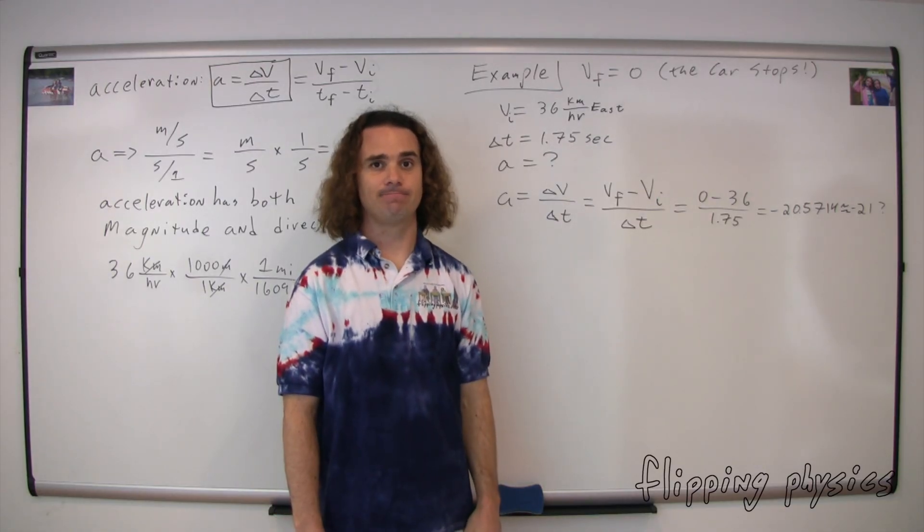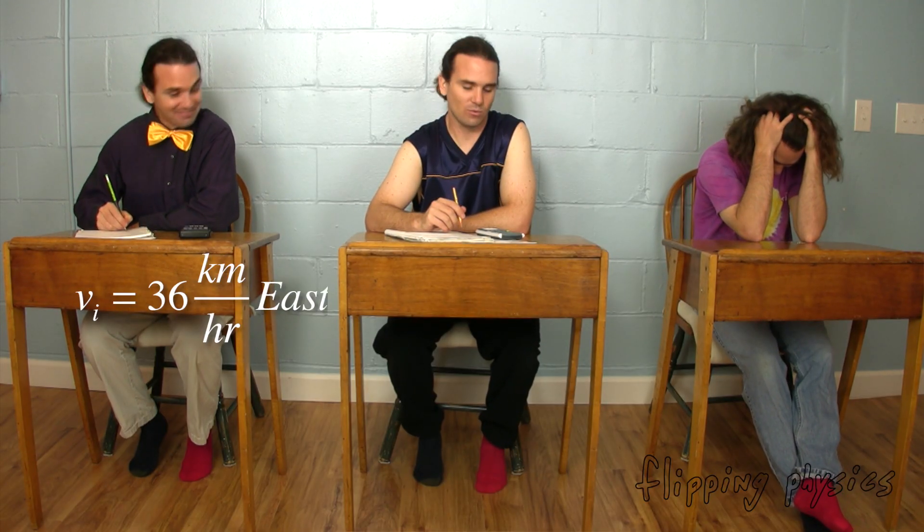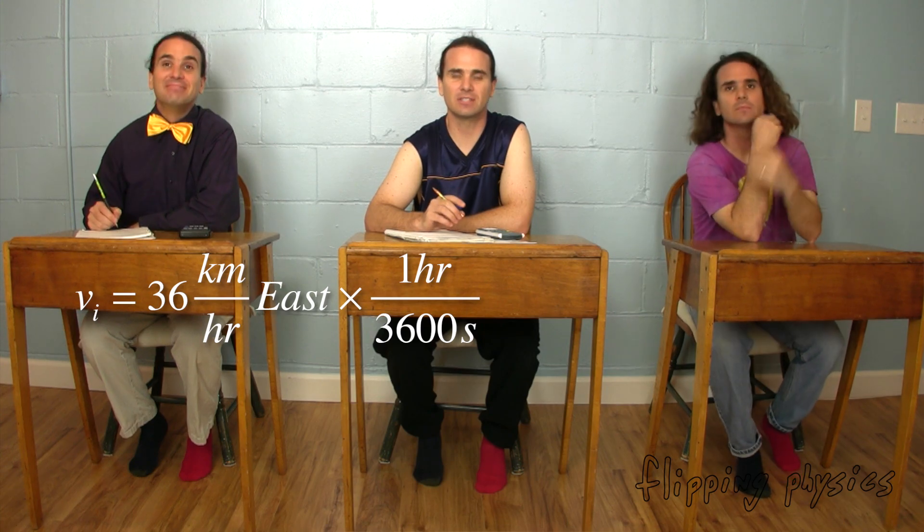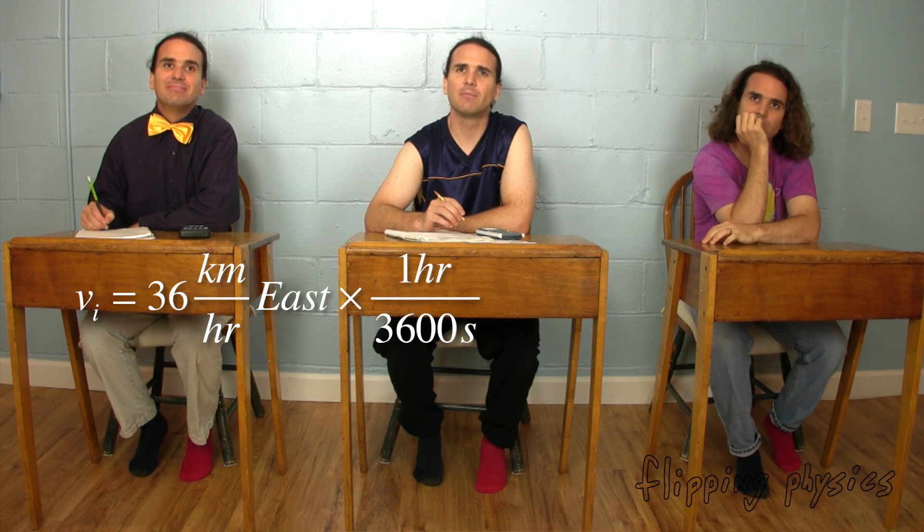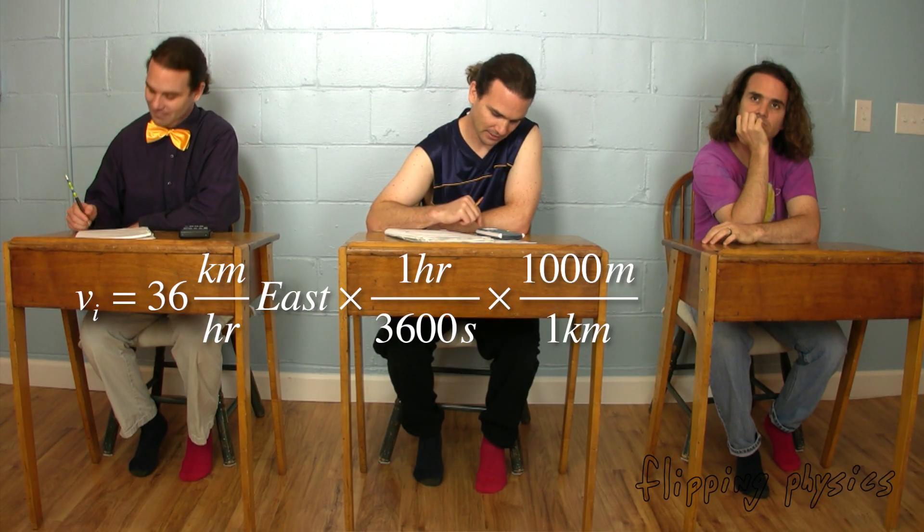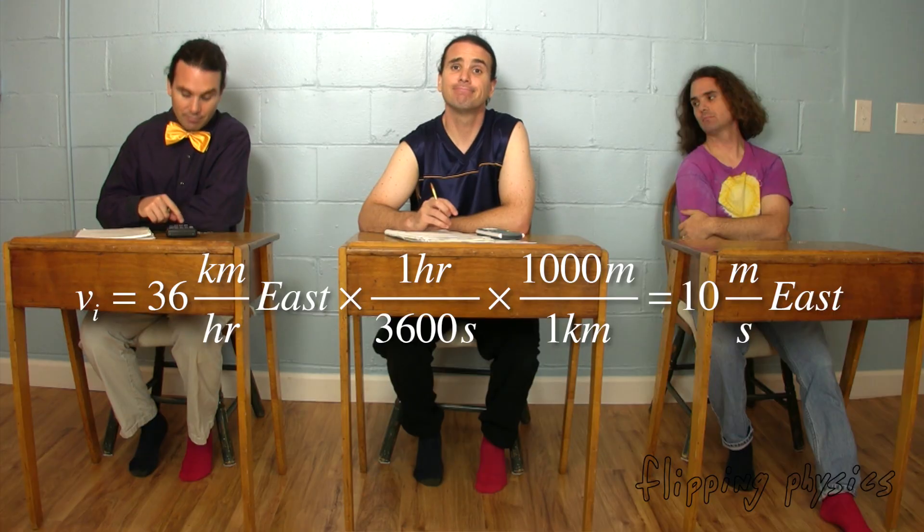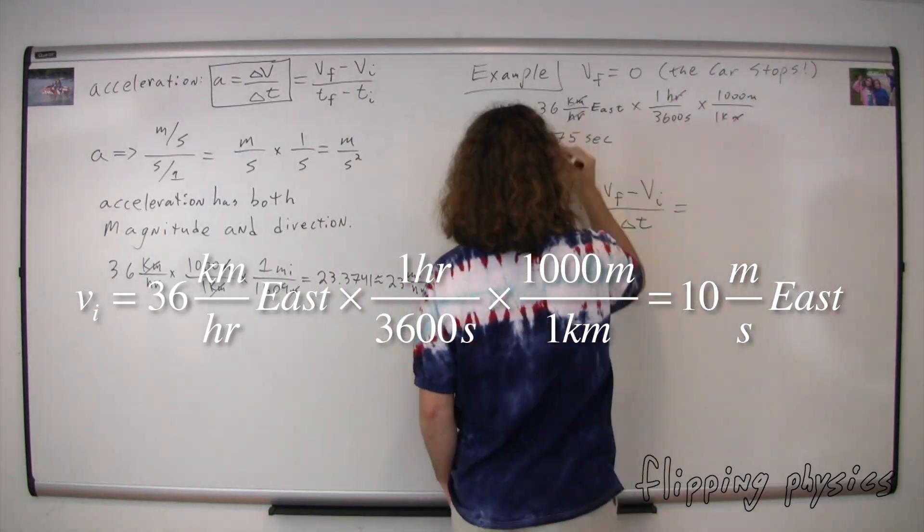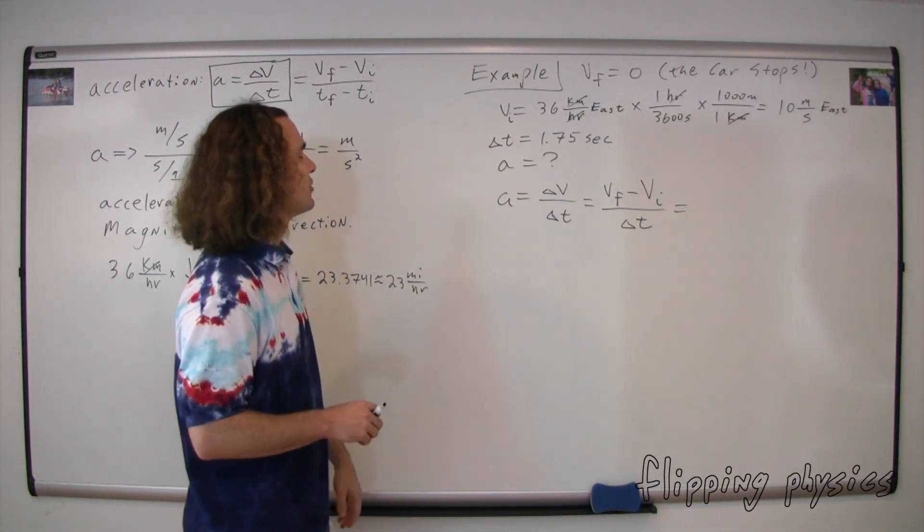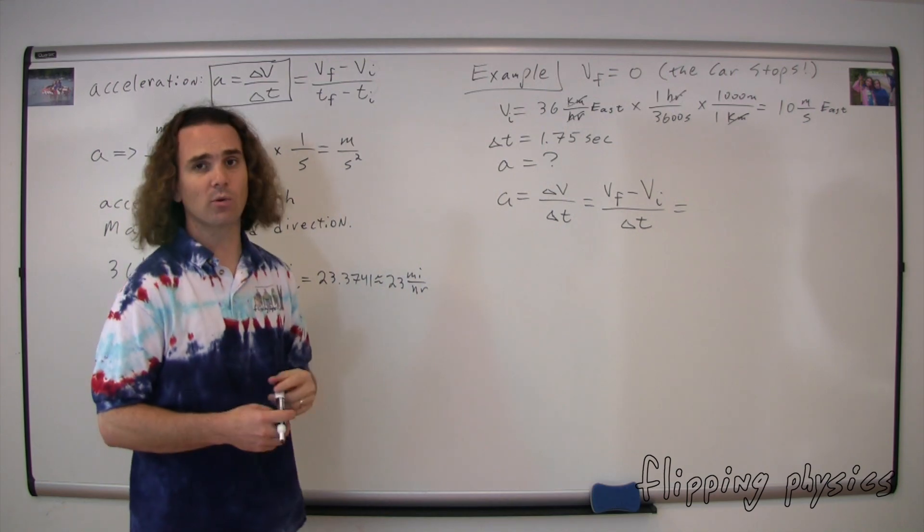We need to convert the 36 kilometers per hour to meters per second before we use it in the equation. So 36 kilometers per hour, we need to multiply by 1 hour over 3,600 seconds to cancel out the hours, and multiply by 1,000 meters over 1 kilometer to cancel out the kilometers. Give me a second. That actually works out to exactly 10 meters per second. Great. Now we can go back to our equation. Rather than using an initial velocity of 36 kilometers per hour east, we're going to use our initial velocity of 10 meters per second. And the dimensions will work out fine now.